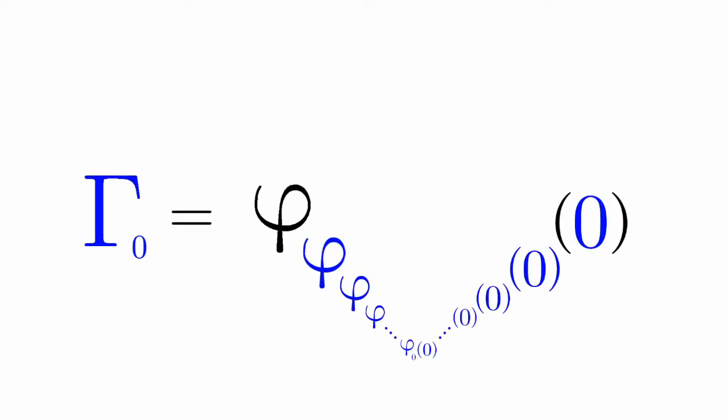We have gamma nought. Gamma nought is equal to an infinite nesting of phi functions.